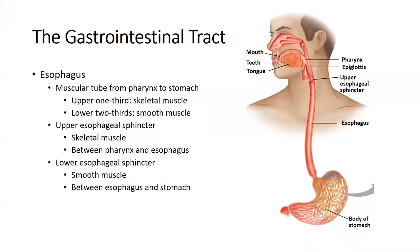Moving down to the esophagus: this is a muscular tube that moves food from the pharynx down to the stomach. The upper third is skeletal muscle, meaning you have voluntary control — this is why you can control the swallowing reflex to a certain degree. The middle third is mixed, and the lower two thirds transitions to smooth muscle, at which point we no longer have voluntary control. There are sphincters that control movement of food through the esophagus.